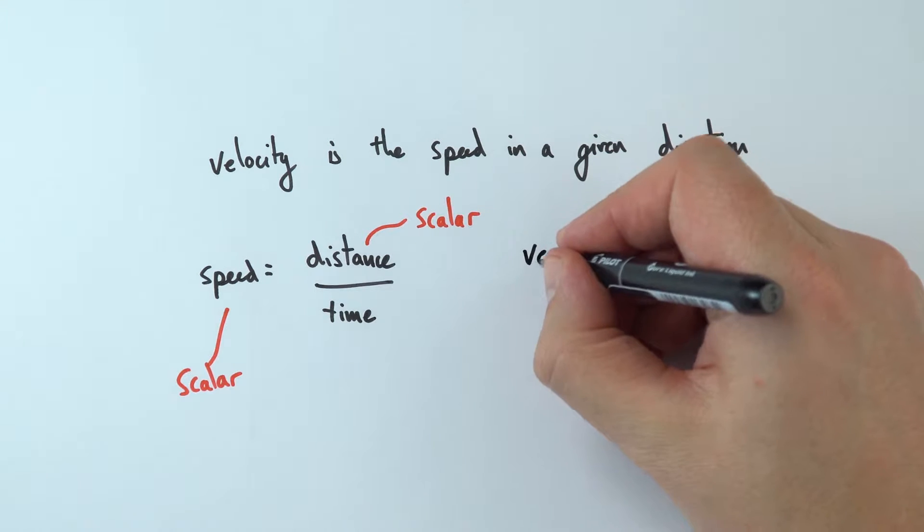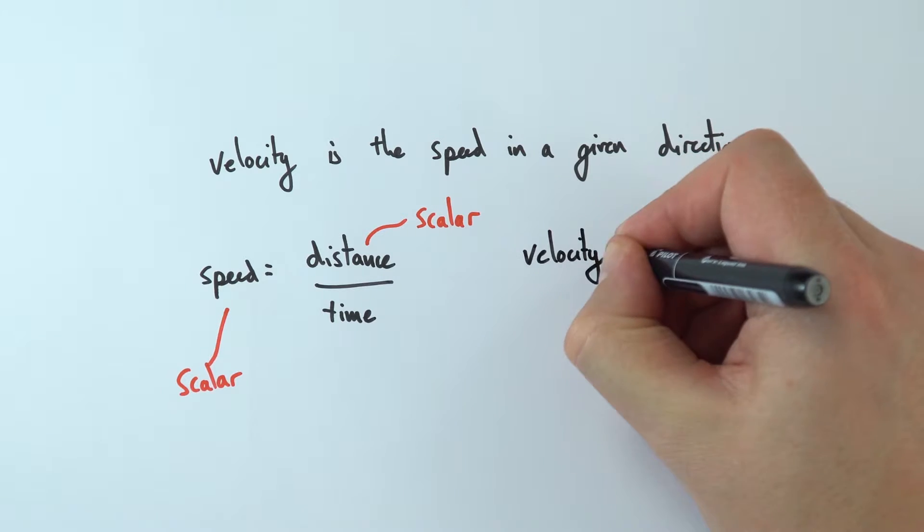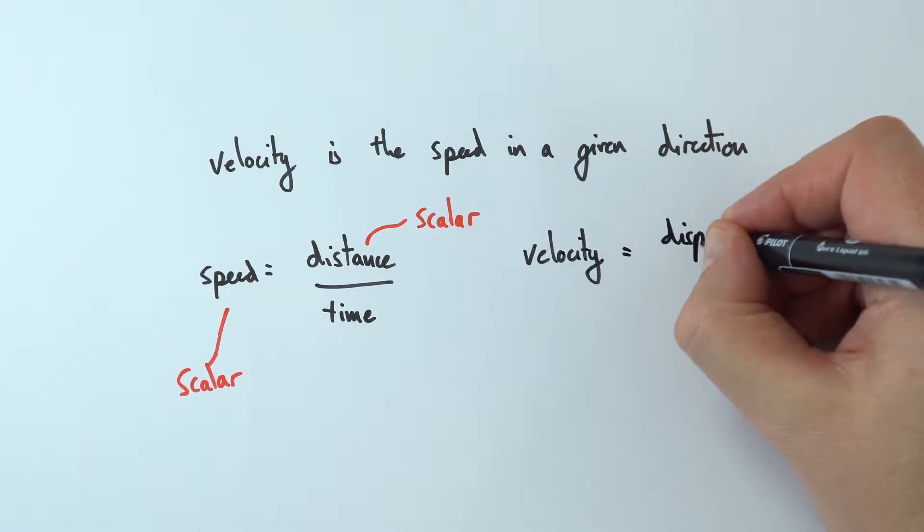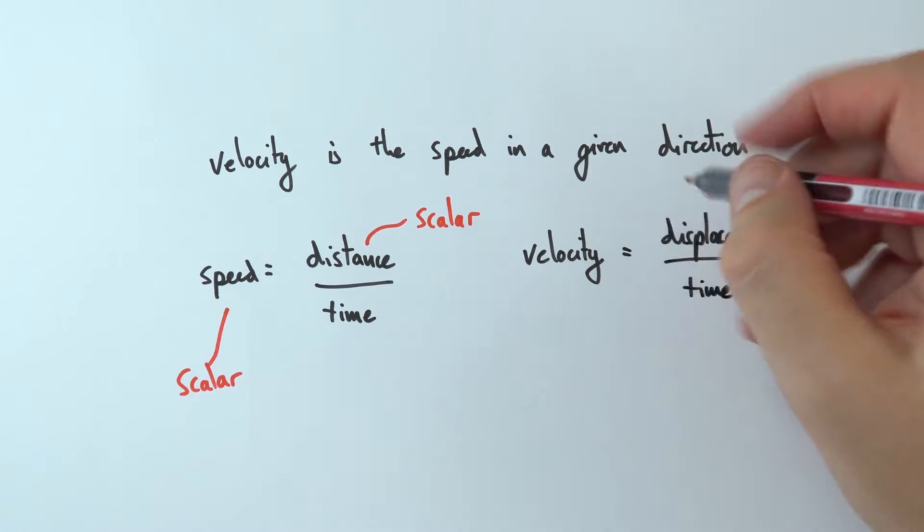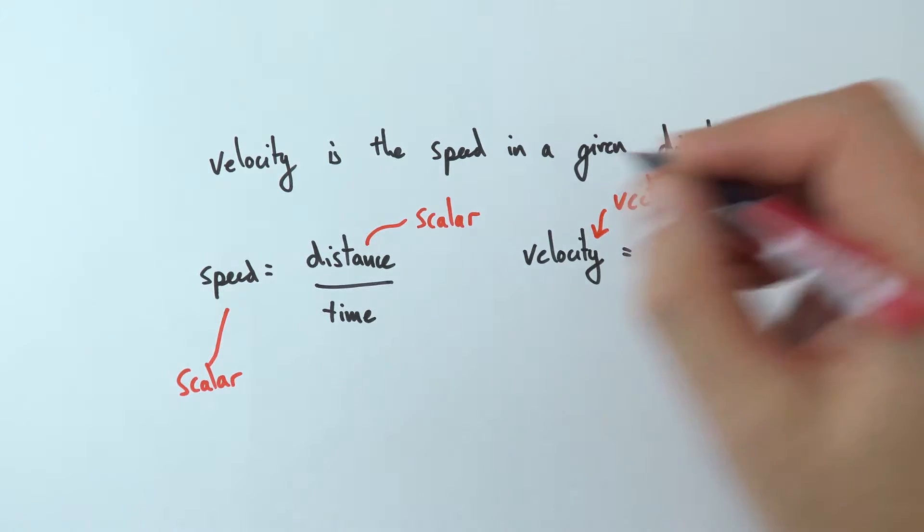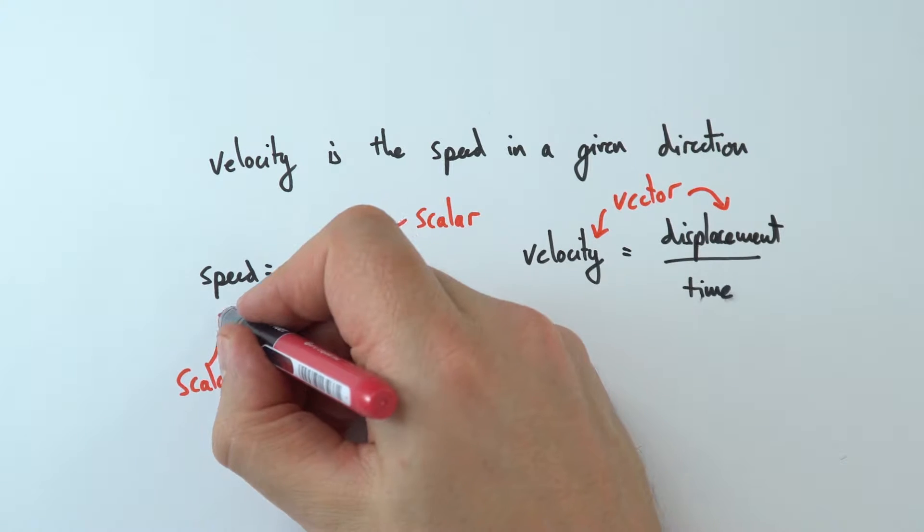Whereas velocity, we work it out, strictly speaking, not by the distance divided by time, but by the displacement divided by time. And both velocity and displacement are vector quantities, which means they've got a magnitude and a direction. So that's quite important.